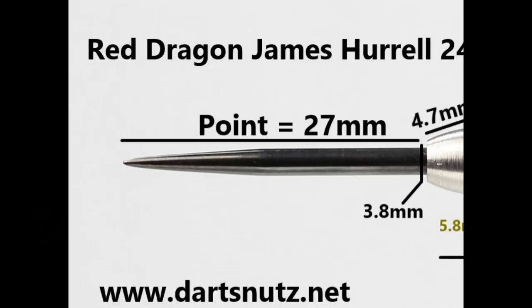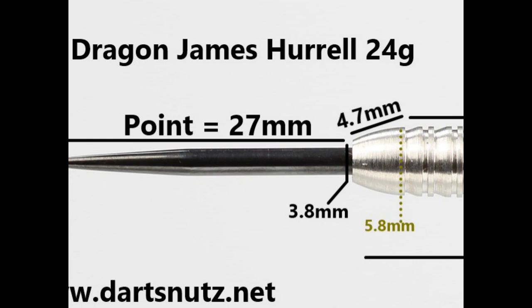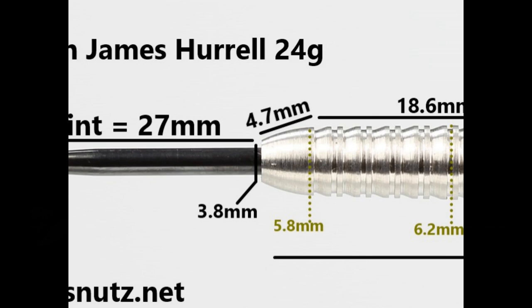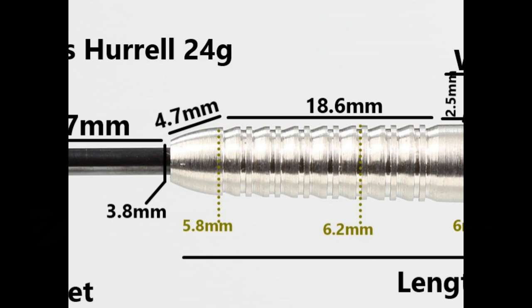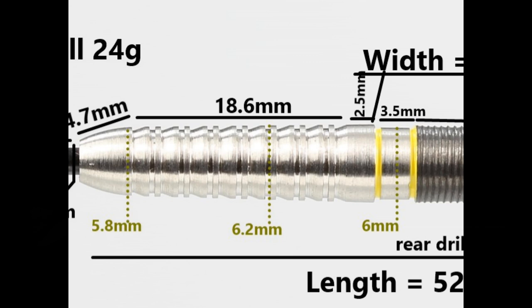The darts are fitted with a black quarter 27 millimeter point. There's a smooth section at the front of 4.7 millimeters before it gets into this rounded shark grip with thin rings in between. That's 18.6 millimeters wide, then a smooth section of 2.5 millimeters, then there's an indentation with a groove either side that's 3.5 millimeters.